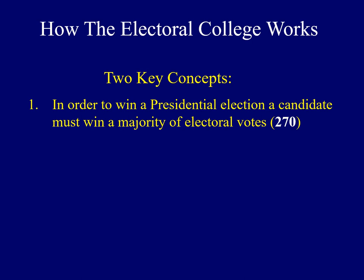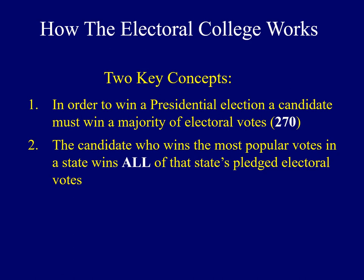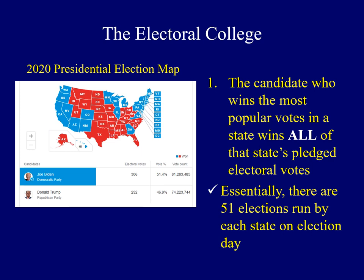How does a person win electoral votes? That's the second key concept. The candidate who wins the most popular votes in an individual state wins all of that state's pledged electoral votes. Rather than having one election on a Tuesday in November every four years for president, essentially what we have are 51 elections — one in every state plus Washington, D.C. — because that's how those electoral votes are handed out on a state-by-state basis.